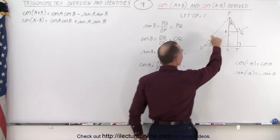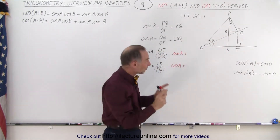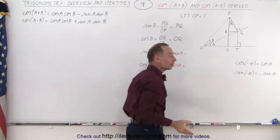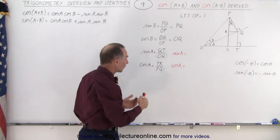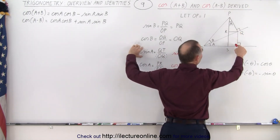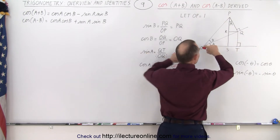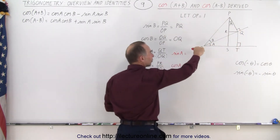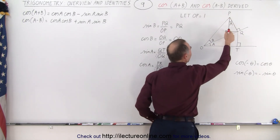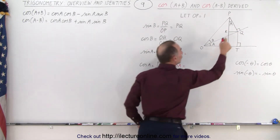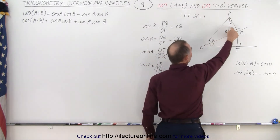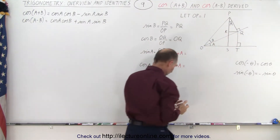Notice that there's only one triangle for which we can associate the angle B, but we have two triangles — this one and this one — where we can associate the angle A. On the previous video, when we were finding the sum and difference for sine, we defined the sine of A as QT divided by OQ, and the cosine of A as PR divided by PQ. Now we're going to reverse that: we're going to define the sine using the small triangle and the cosine using the bigger triangle.